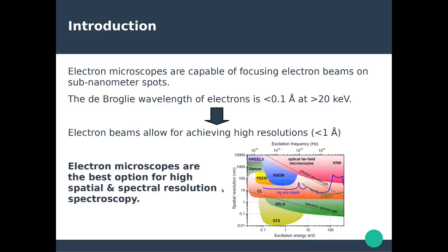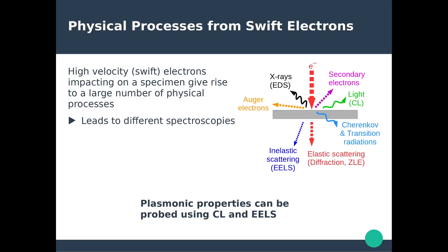Electron microscopes are the best options in terms of both spatial and spectral resolution. When you send high-velocity electrons — called swift electrons — onto a specimen, many different physical processes occur simultaneously. Those electrons can pass through the specimen and scatter elastically without losing energy. As a result of collisions between the energetic electrons and atomic nuclei, you can emit X-rays, giving you the spectroscopy technique known as EDS or EDX. Secondary electrons and Auger electrons can also be emitted from interactions with valence electrons.